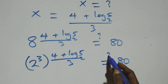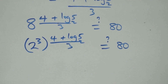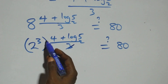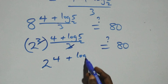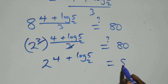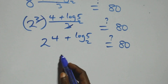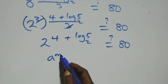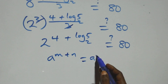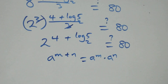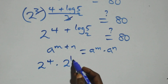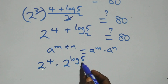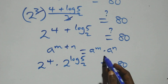This equals to 80 on this side. The powers multiply: the 3 cancels, giving 2 raised to power 4 plus log₂5. This equals 80. This follows index laws: A raised to power n plus m is the same as A raised to power n, times A raised to power m. So this becomes 2 raised to power 4, times 2 raised to power log₂5. This equals 80.